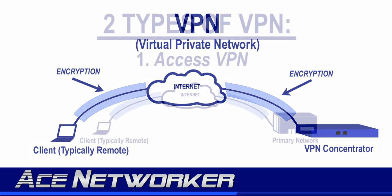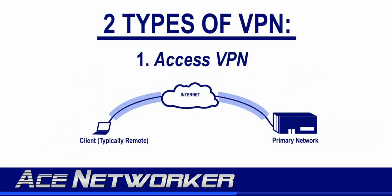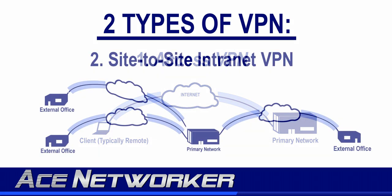There are two major categories of VPN, each depending on what the VPN is being used for. The first is an access VPN — this is where VPN is used most often. An access VPN is used to support a SOHO, a small office/home office, in most cases. In an access VPN, the PC at the home encrypts packets it sends out, effectively encrypting everything and creating a tunnel from the PC to the VPN device on the actual network.